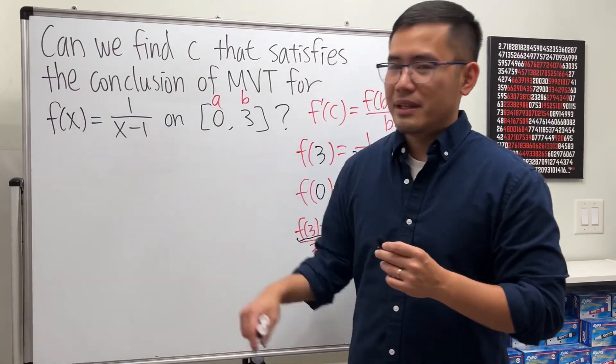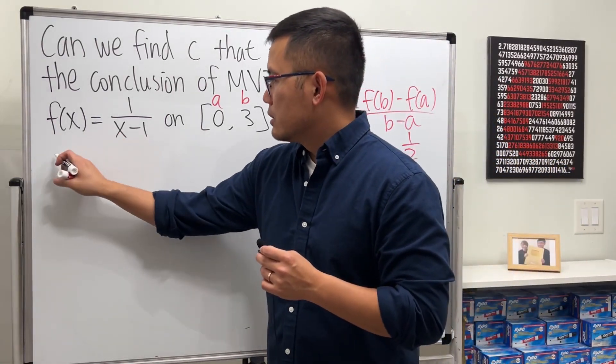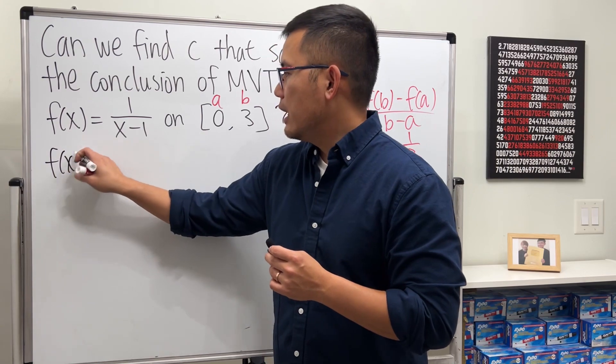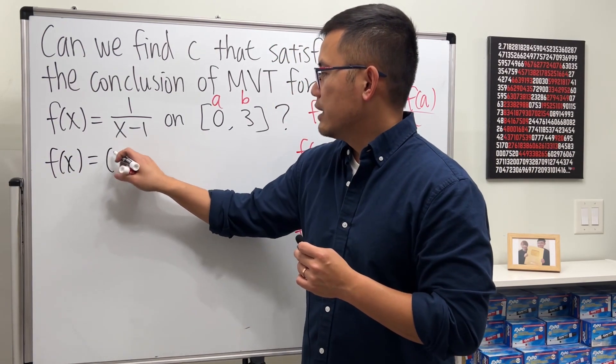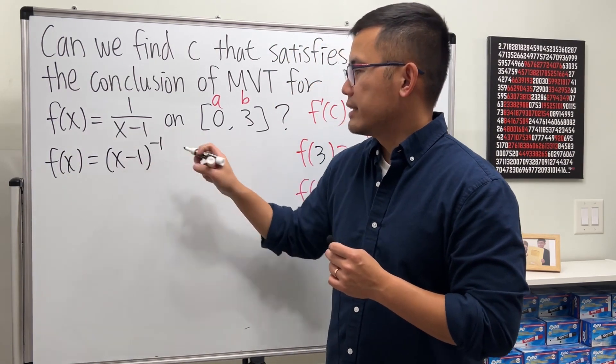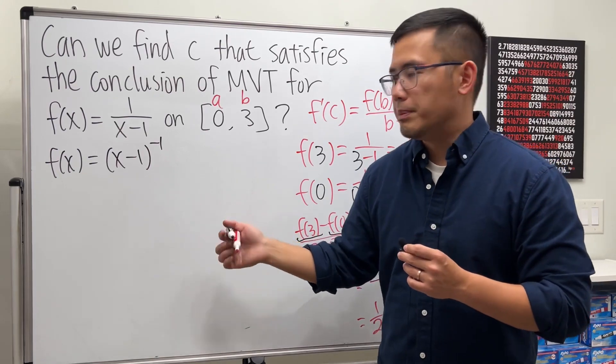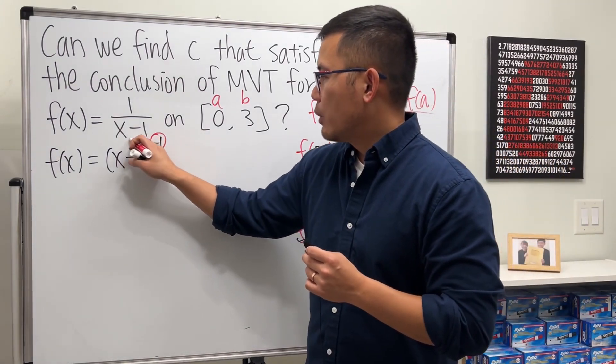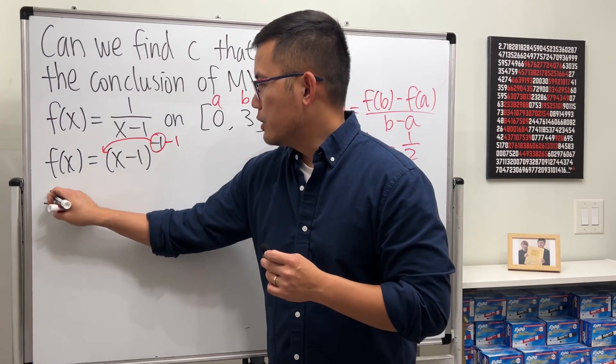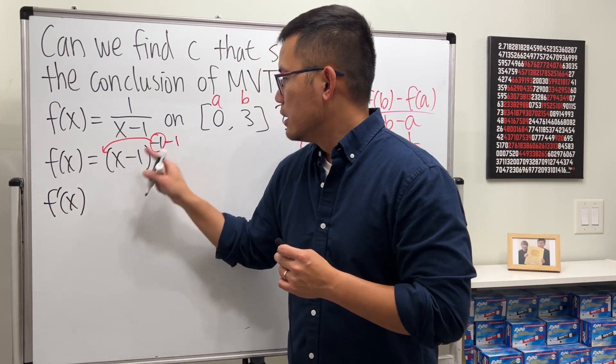Now let's come back here and do the derivative. So we can first write the function as x minus 1 raised to a negative 1 power. Now we can use the power rule. Put the power to the front, minus 1. The derivative is negative.